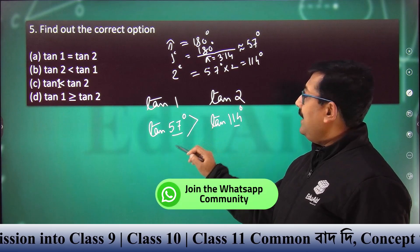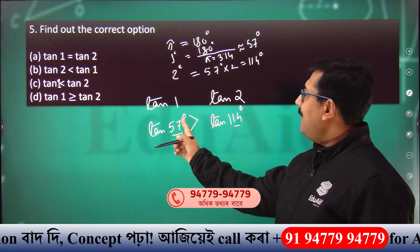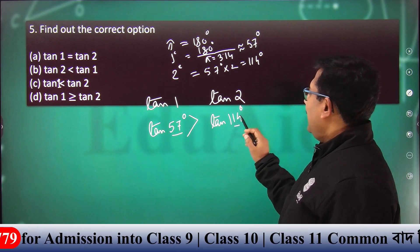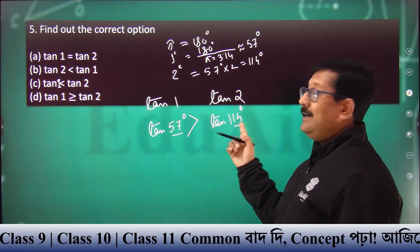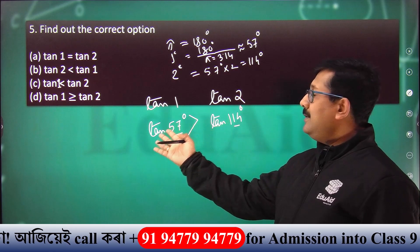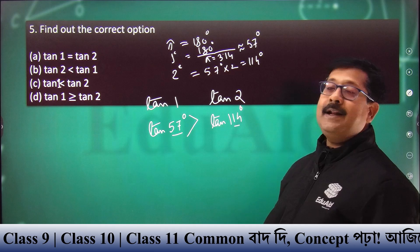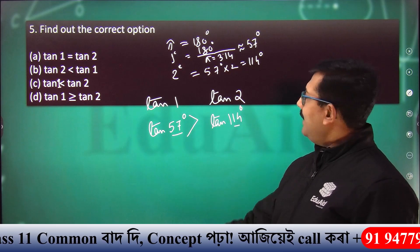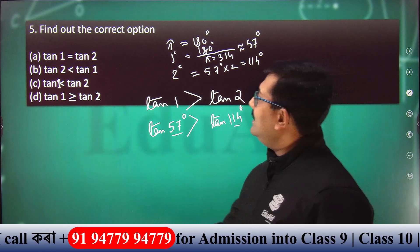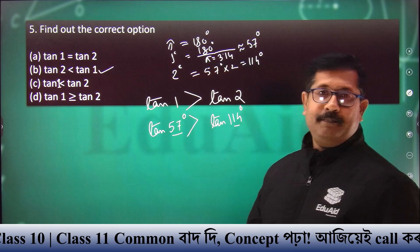57 degrees in first quadrant — tan positive, as all trigonometric ratios are positive in first quadrant. tan 114 degrees — 114 degrees in second quadrant — tan is negative. A negative value is always less than the positive value. So tan 57 degrees is greater than tan 114 degrees. Therefore, tan 1 radian is greater than tan 2 radian.